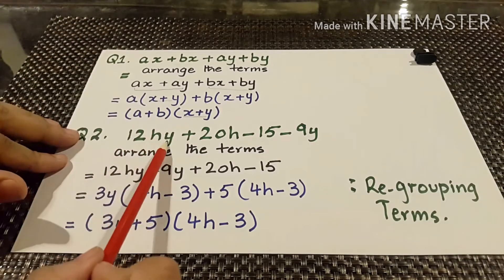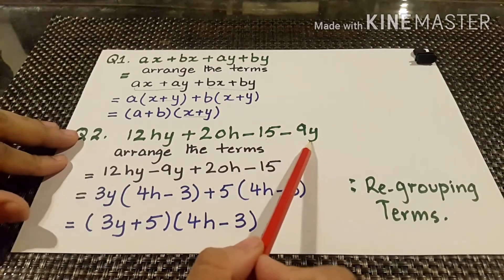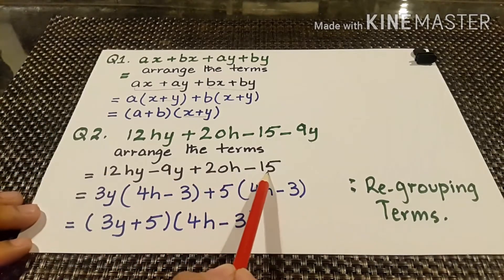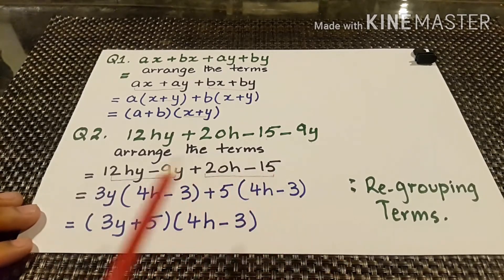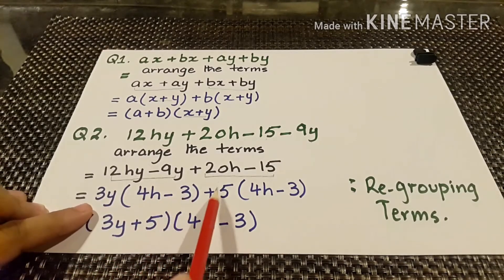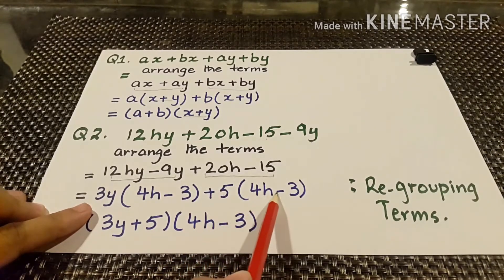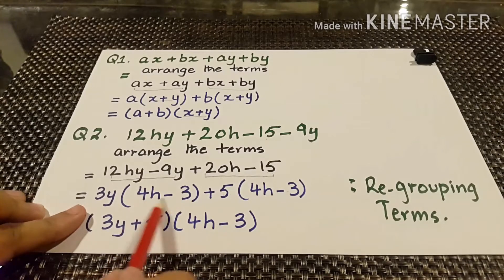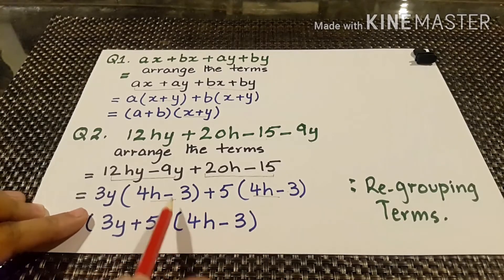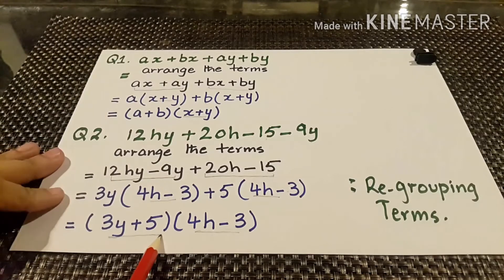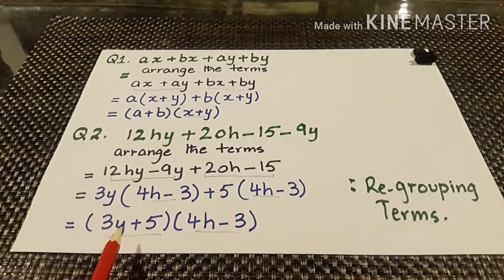Question number 2: 12hy plus 20h minus 15 minus 9y. We arrange the terms as 12hy minus 9y plus 20h minus 15. From the first group we take 3y as common and get 4h minus 3. From the second group we take 5 as common and get 4h minus 3, since 5 times 4 is 20h and 5 times 3 is 15. We can see 4h minus 3 is common, so the factors are 4h minus 3 and 3y plus 5.